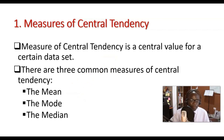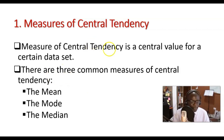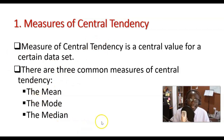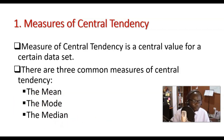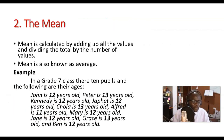There are three common measures of central tendency. For this lesson we are going to look at three: the mean, the mode, and the median. Let us look at each one of these, starting with the mean.